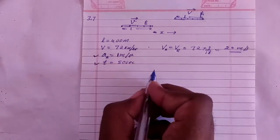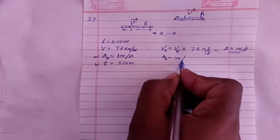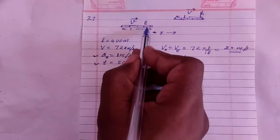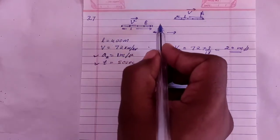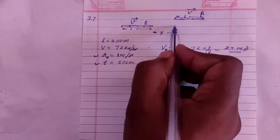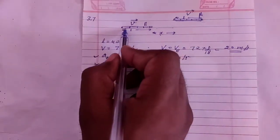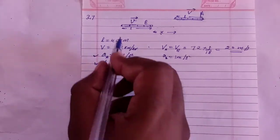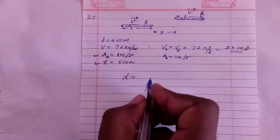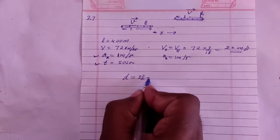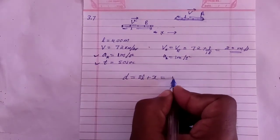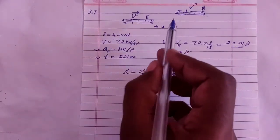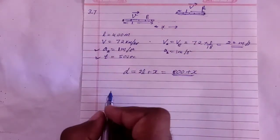Now, using relative motion: the acceleration is 1 m/s² for B, direction same. Each train has a length of 400 meters, so together they span 400 plus 400 equals 800 meters total distance. To find the original distance x between them, we use the total relative distance traveled.